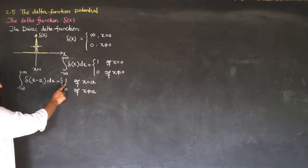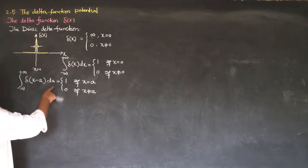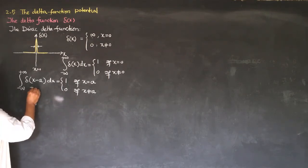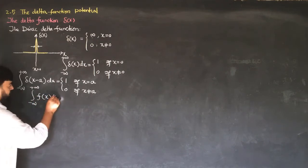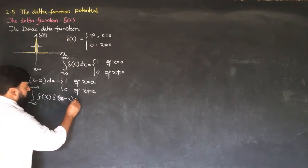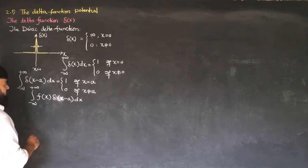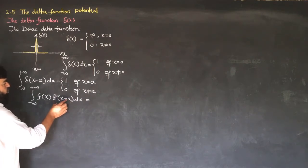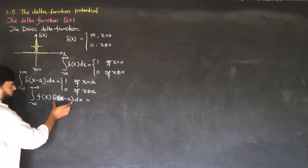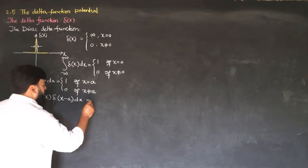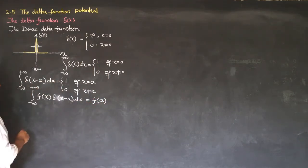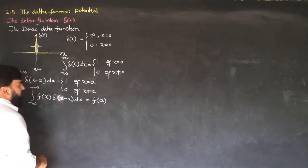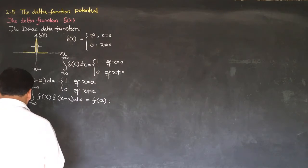The delta function gives the value of the function only at a single point. It is used where we want to remove singularity from a given function. For example, the integral of f(x) · δ(x − a) dx: this delta function gives a value only when x = a; for all other points it equals zero. So the integral equals f(a) only, because when x = a the integration gives 1, and the function gets a single value equal to f(a).